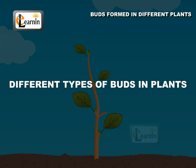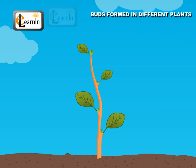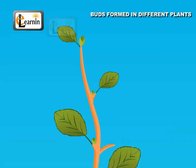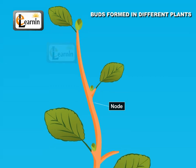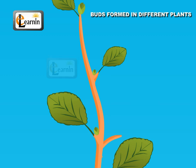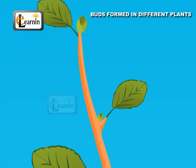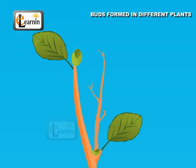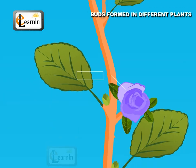Different types of buds in plants: Stems usually grow above the soil and produce buds, leaves, flowers, and fruits. The place where a leaf rises on the stem is the node, and the portion between two nodes is called an internode. The stem ends in a bud known as the terminal or apical bud. Buds are also present in the axil of leaves, known as axillary buds. Buds which contribute to growth are called vegetative buds, and those that give rise to flowers are known as flower buds.